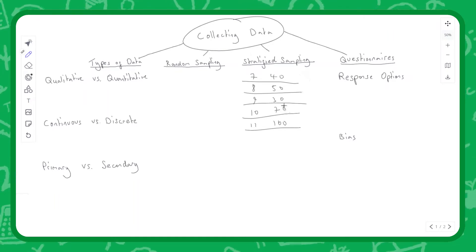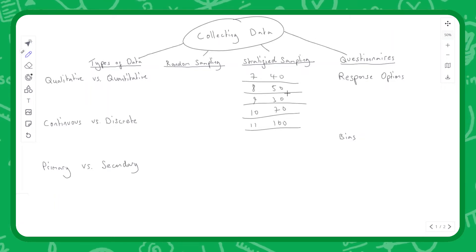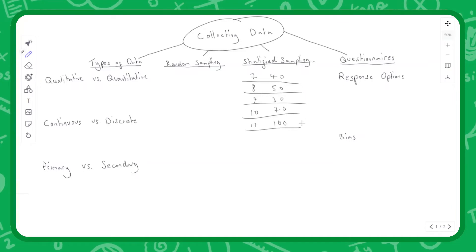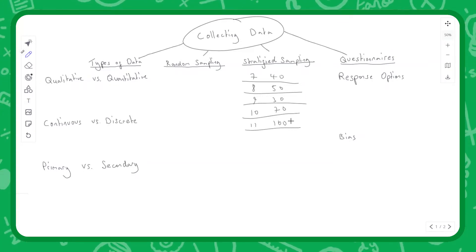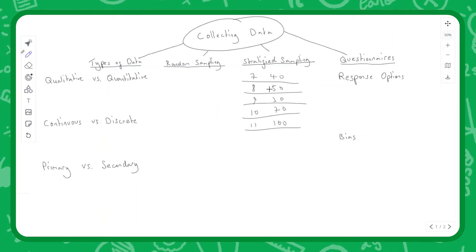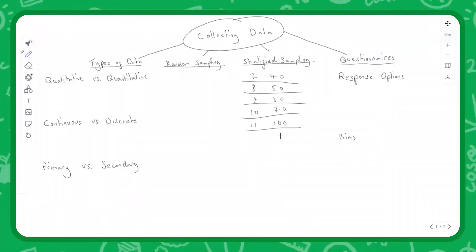If we randomly sample 50 kids, we'll roughly get 10 from each group, but it's not likely to give us the most accurate results. What we should do instead is weight our results. We should sample twice as many year elevens as year eights because there are twice as many year elevens in the school. That's stratified sampling—taking into account the distribution of your sample.